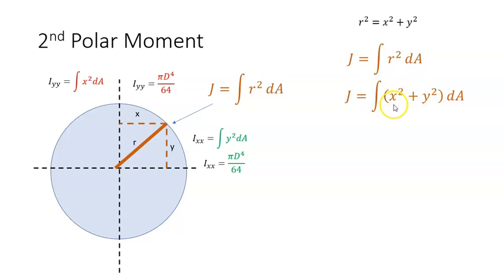And when we multiply that out, that's just X squared dA plus Y squared dA. And we have X squared dA over here. And we have Y squared dA here.